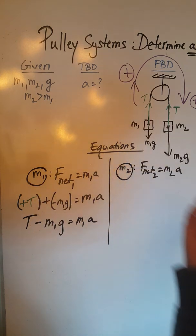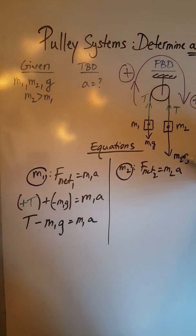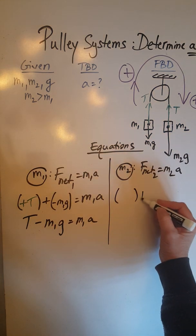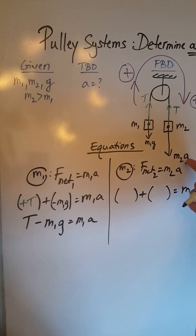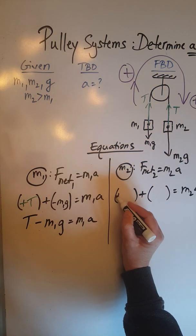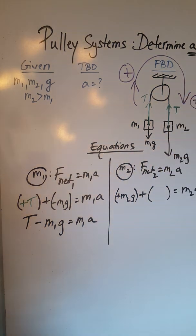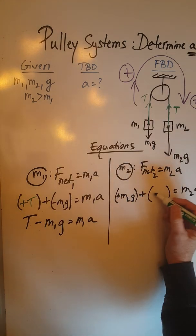For object M2 we are going to have M2G in the positive direction and T in the negative direction, so we have a vector sum of two forces again being equal to M2A. M2G is positive so plus M2G while T is negative so this is a negative T.